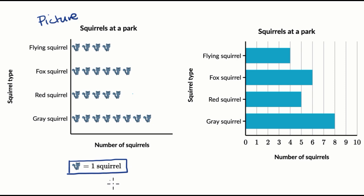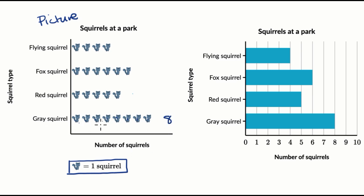So if you want to know which one has the most — and I guess it would have been the most regardless of what this key said, even if it was two squirrels — you can see just by looking at it that you see the most gray squirrels here. There's the most number of these little squirrel pictures. We can actually know exactly how many gray squirrels there are: one, two, three, four, five, six, seven, eight of these pictures. Each of them represents one squirrel, so there are eight gray squirrels.